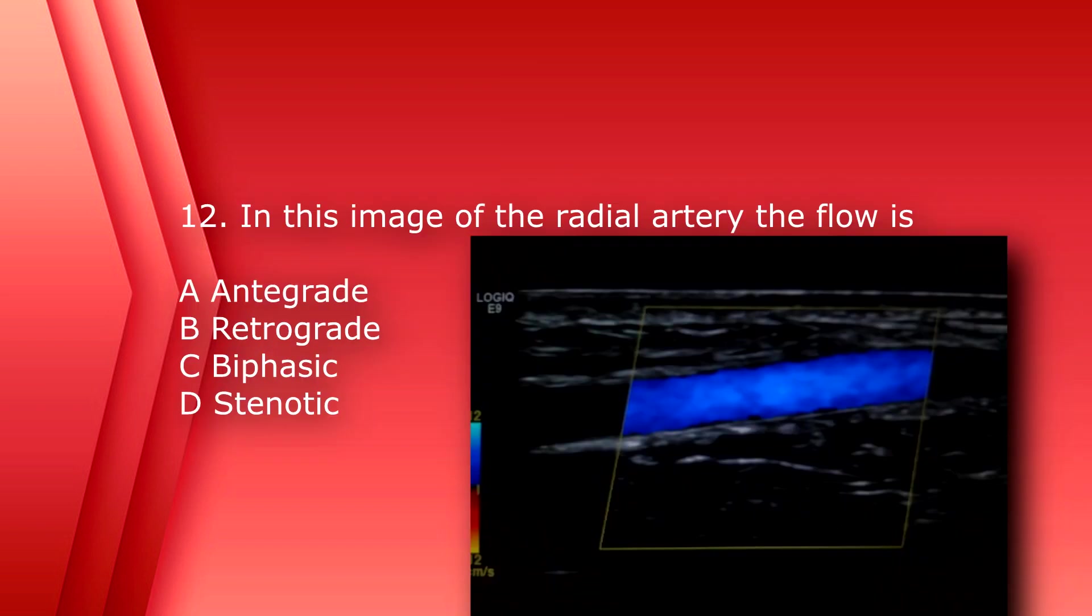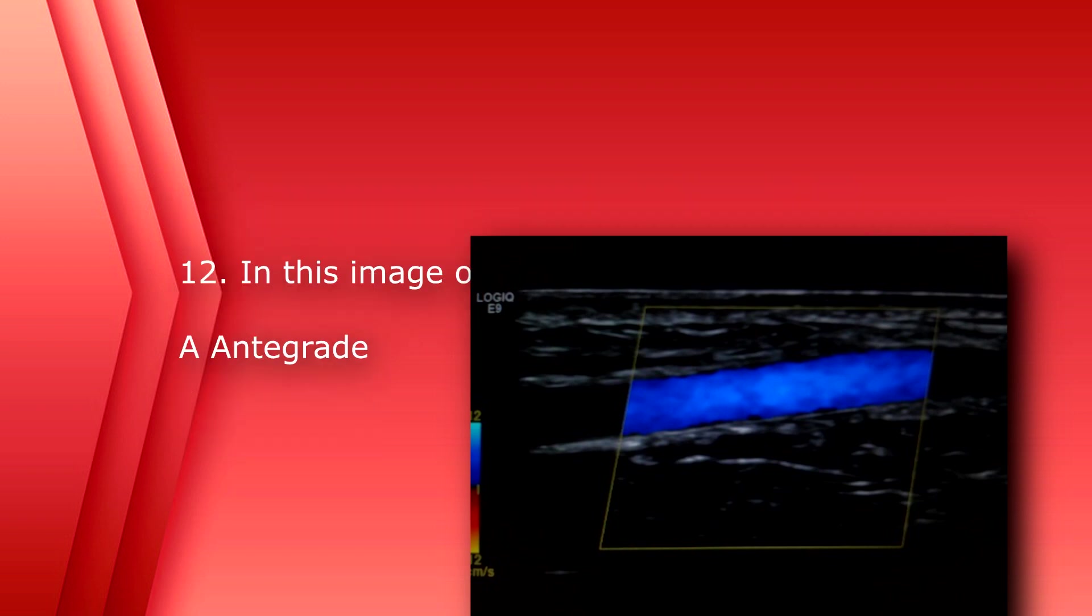Number 12. In this image of the radial artery, the flow is A, antegrade, B, retrograde, C, biphasic, or D, stenotic. The answer is A, antegrade. Arterial flow is usually going towards the extremities, away from the heart. In this image you can see that you have the color inverted, so the blue flow is going towards the transducer.